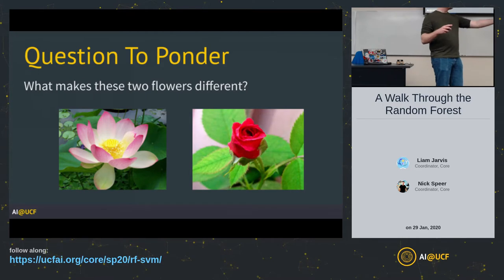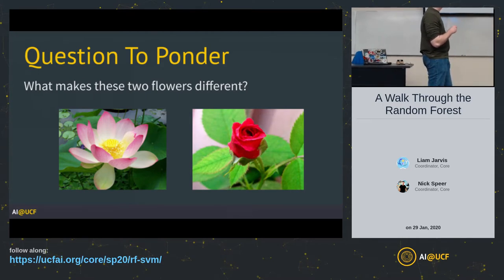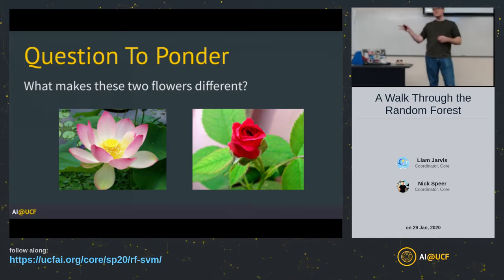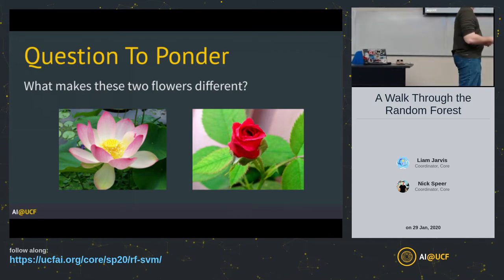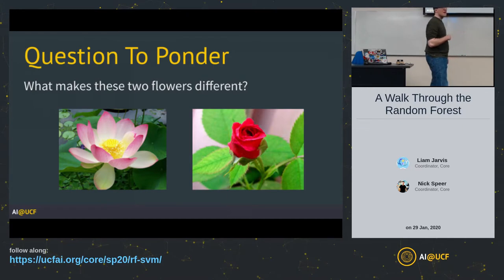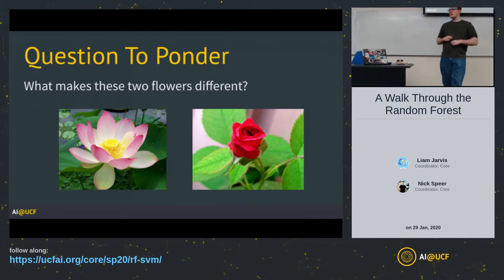Shapes are different — this flower kind of opens up here, while this other one is kind of compact. So yeah, different shape. Color too — this one here is going to be a red rose, and this one is a lotus with a nice little pink and whiteness to it. So you've got color there.